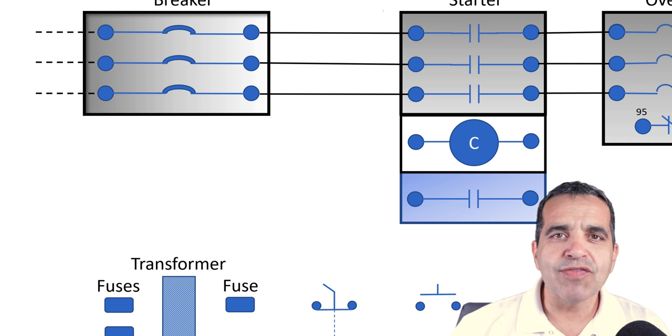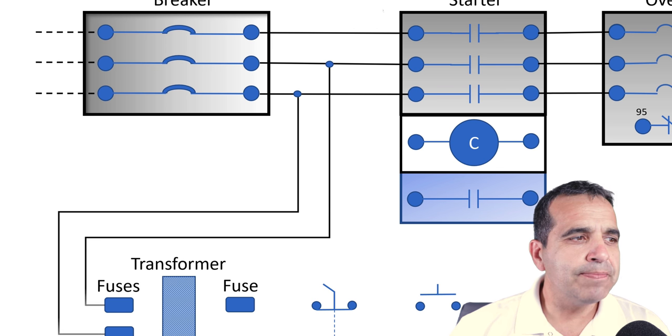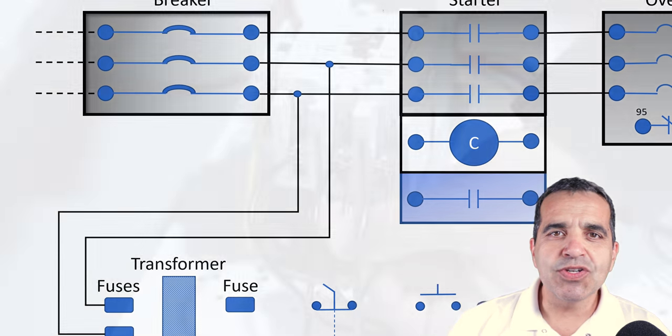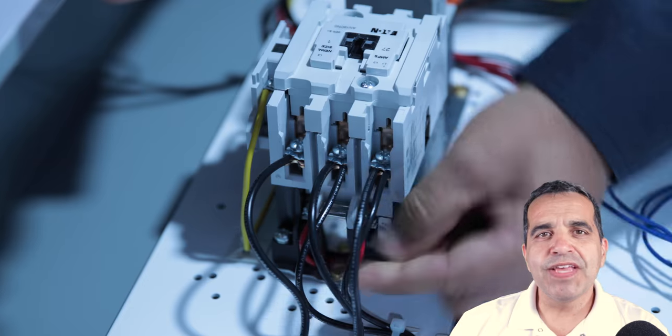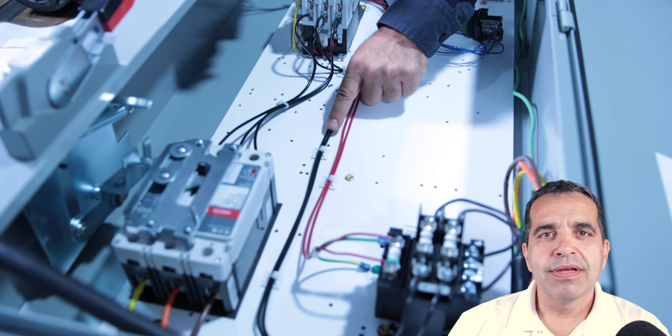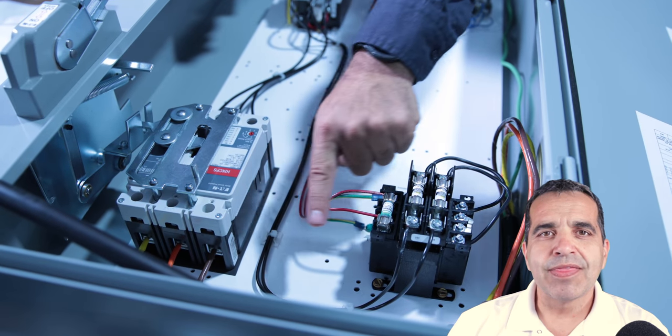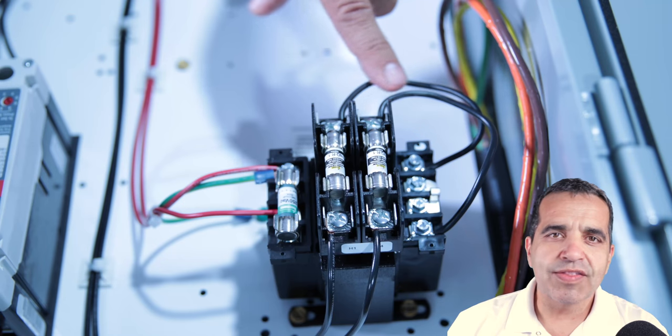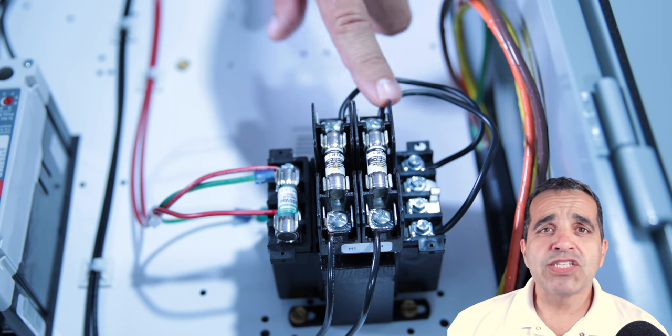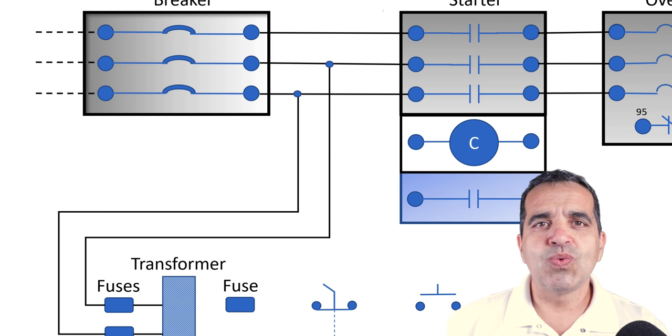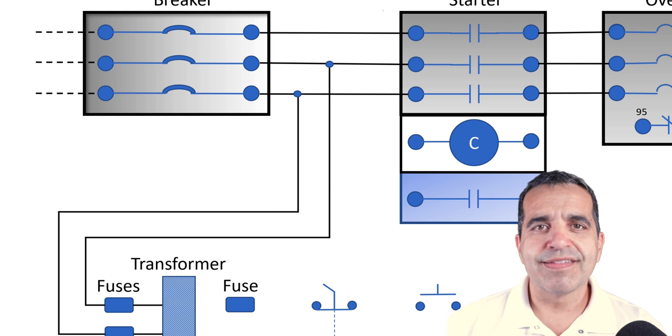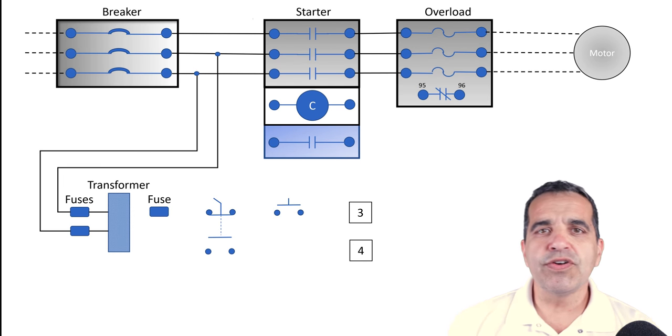I'll show that here on our diagram. You'll see the tap on line one and line two coming down and feeding our fuses, and then those fuses feed our transformer. That transformer is converting 480 volts single-phase to 120 volts single-phase, and we're going to use that 120 volts control power.